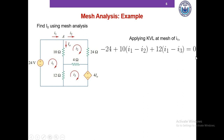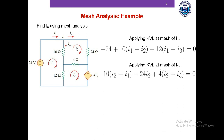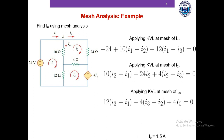Please pause this video and write the KVL equations for I2 and I3, and then we'll match our answers. I0 here is the current that goes through the resistor — it's something defined in the question. We defined only I1, I2, and I3 as our mesh currents. We did not define I0.